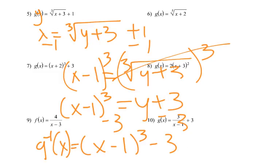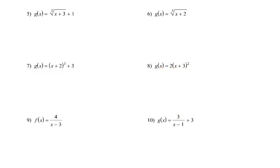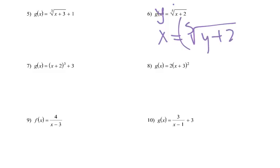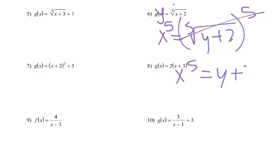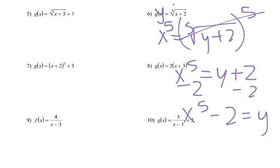Number 6, same idea. That's y, change it to x, so we get the 5th root of (y plus 2). Nothing outside of the root, so we take it to the 5th power: x to the 5th equals — those cancel — y plus 2. Subtract 2: x to the 5th minus 2 equals y. That's our inverse, so we change it to that inverse notation.